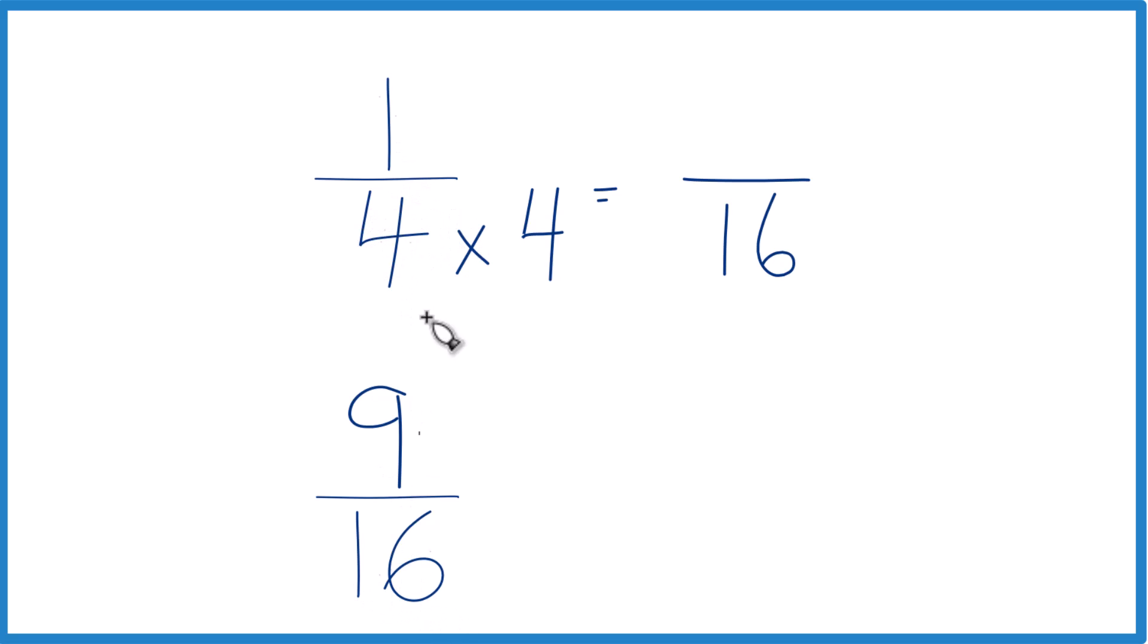But I can't just multiply the denominator here by 4. I need to multiply the numerator by 4 as well, because 4/4 is just 1. So we're multiplying by 1. It doesn't change the value, just the way we represent it.